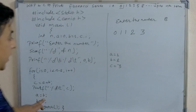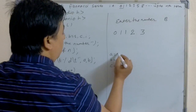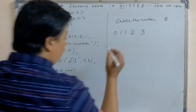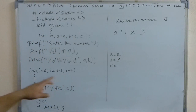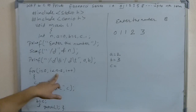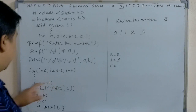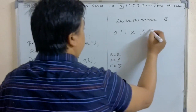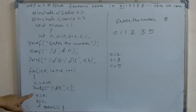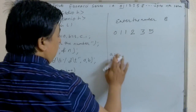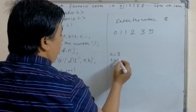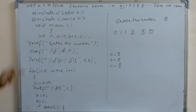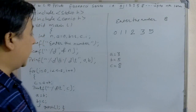After printing 3, a becomes b (which is 2) and b becomes c (which is 3). i increments again. Now c is equal to a plus b — 2 plus 3 is 5 — and it prints 5. Then a becomes b (3) and b becomes c (5). The loop continues in this way until the condition i less than n minus 2 is no longer satisfied.